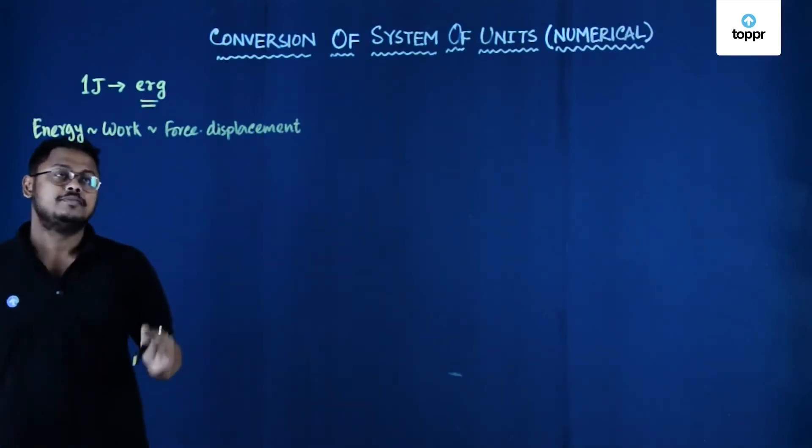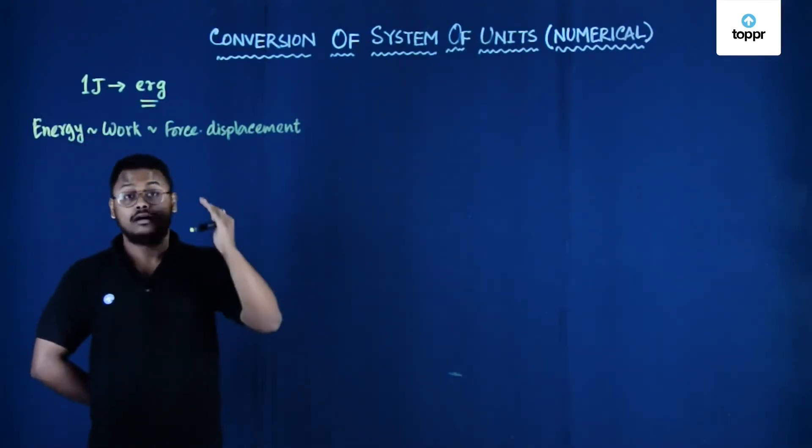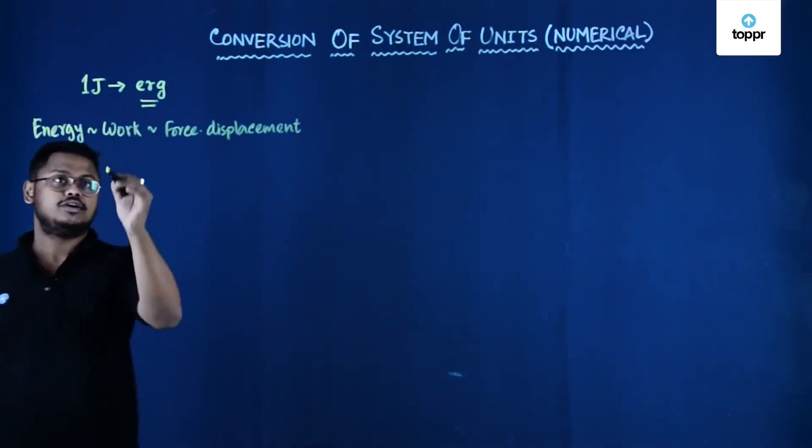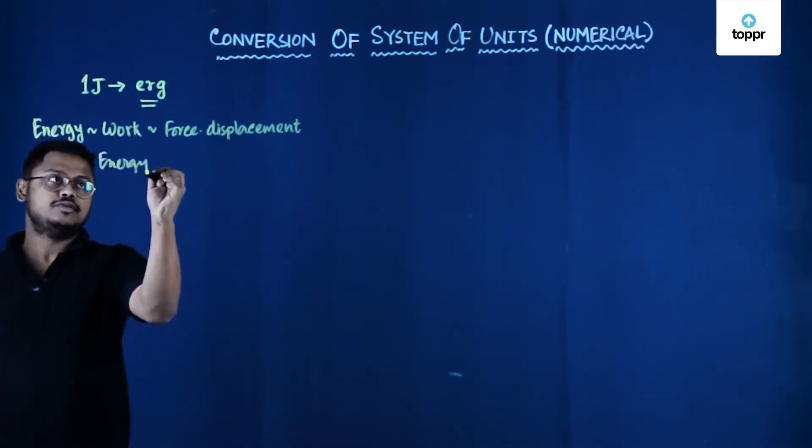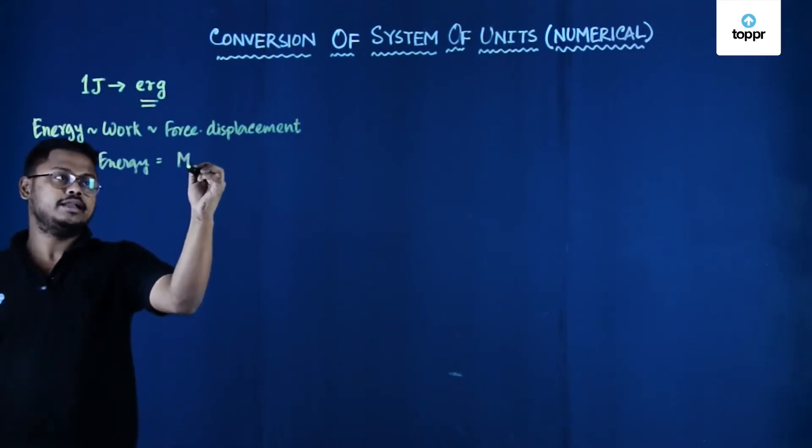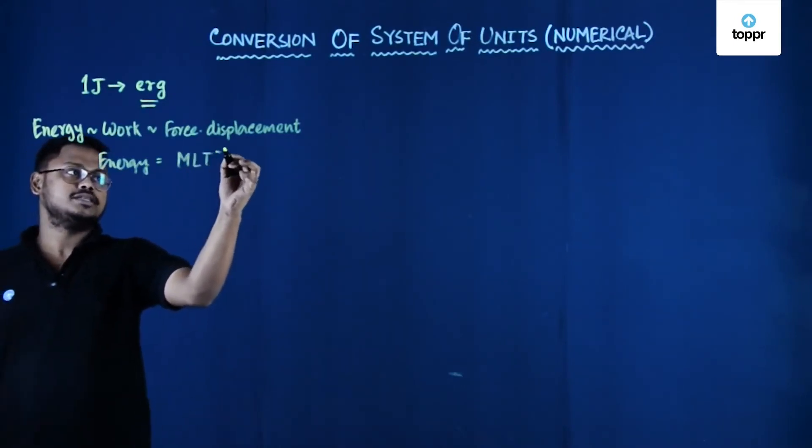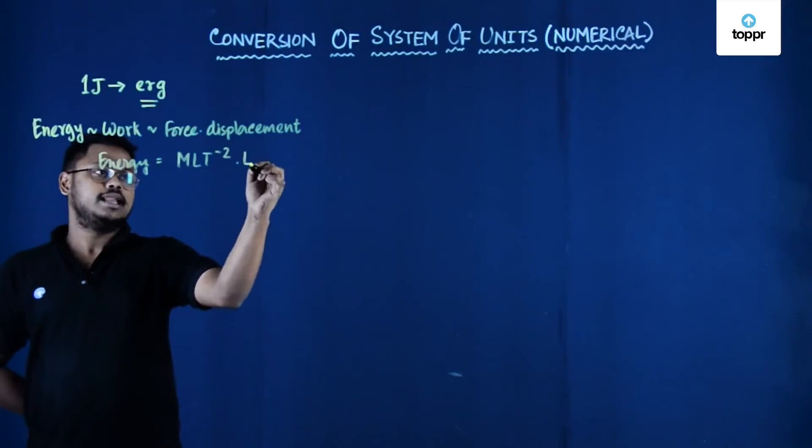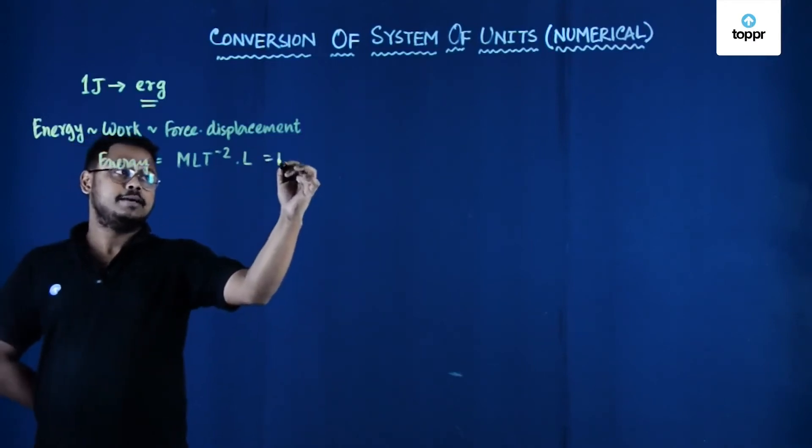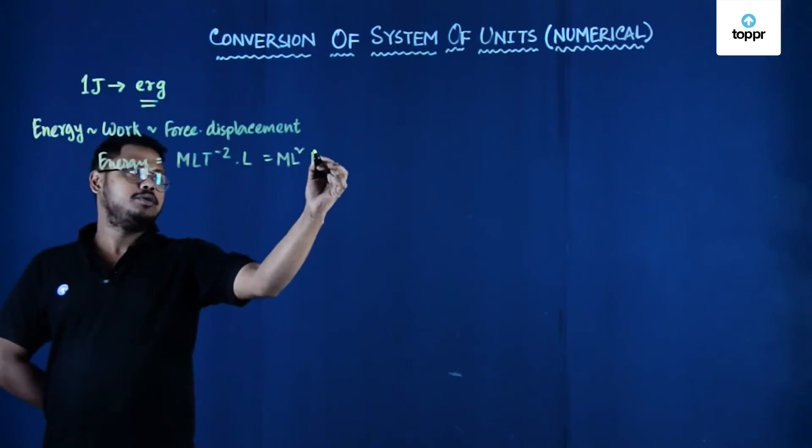So the dimension of energy or the work will be m into l t to the power minus 2 times l. That is m l square t to the power minus 2.